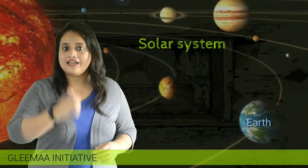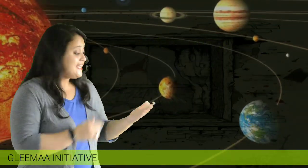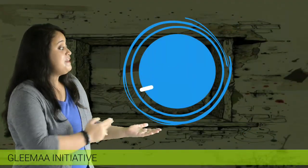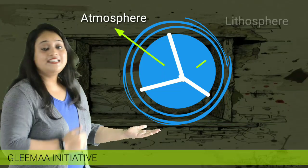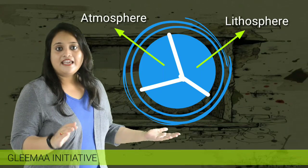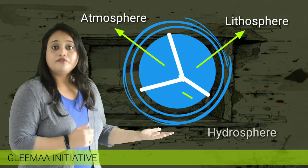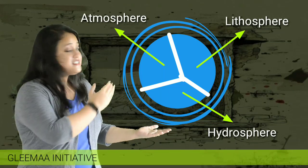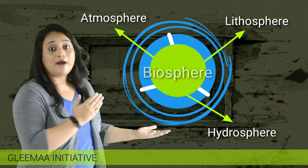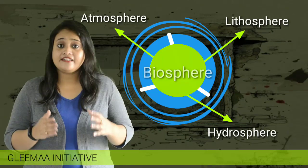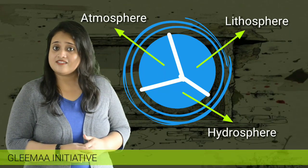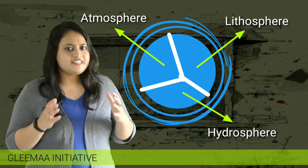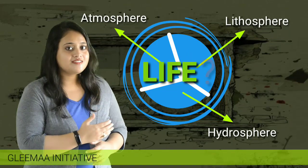Our Earth is the only planet in the entire solar system where life exists. This is because in our Earth, there are three different spheres. The first one is the atmosphere with an abundant supply of oxygen. Another one is the lithosphere with the entire land mass. And the last one is the hydrosphere, full of water. These three spheres combinedly form the biosphere where life exists. Now, among these three layers, if any one layer gets threatened or goes extinct, it is absolutely not possible to continue life.